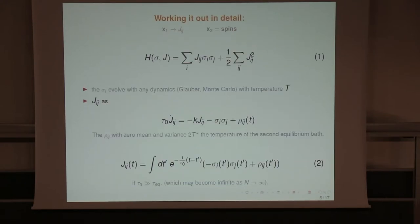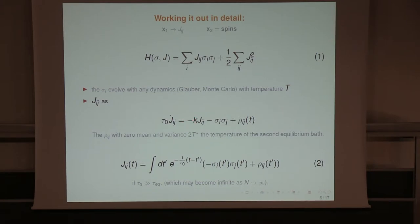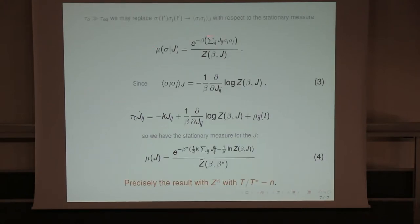How would you do this in practice? This is what we did with Emanuele Mingione and Pierluigi Contucci. Our variables are the spins and the J's. We evolve the spins fast with anything, and then the J's evolve with another equation at another temperature. Note that a parameter k imposes a timescale. The proof that you're getting this measure: you write the explicit equation for the J's. This says that given the J's — because they are very slow — the sigmas have the Gibbs measure. Because of the slowness, you can replace this by its average, and in three lines you get to the multi-thermalization formula.